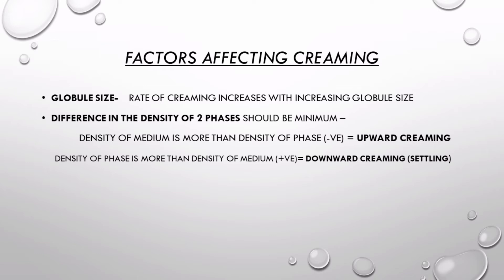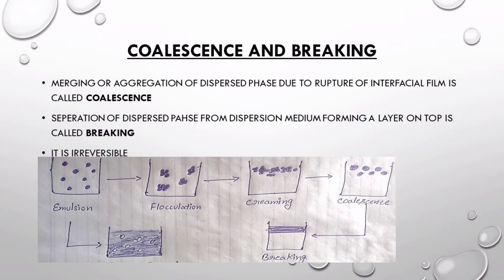The rate of creaming is inversely proportional to the viscosity of the dispersion medium. So if the dispersion medium is more viscous or dense, the rate of creaming will be slower. If the difference between the density of the dispersed phase and the medium is positive, it means the density of the phase is more than the medium, resulting in downward creaming — that is, settling of those floccules through the bottom of the container.